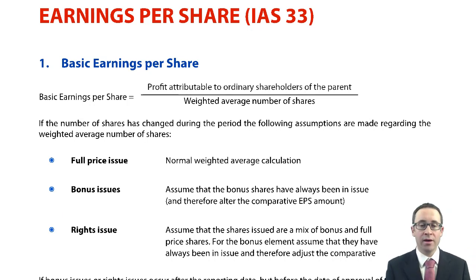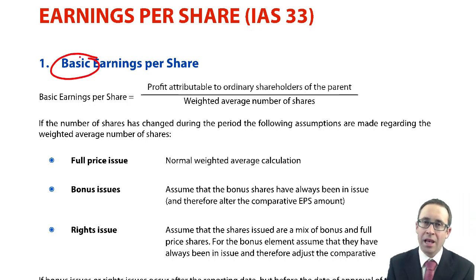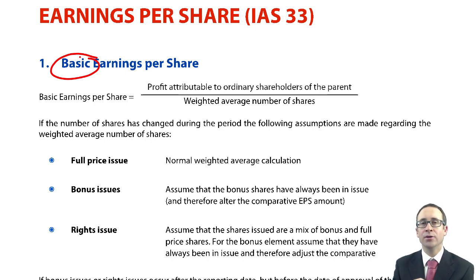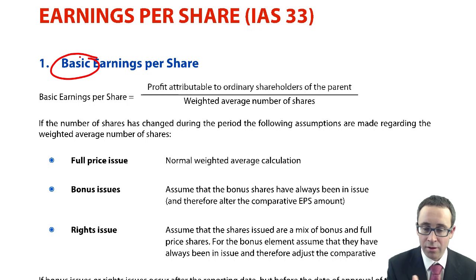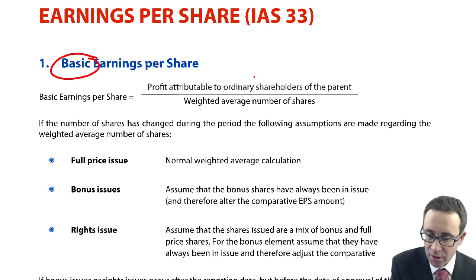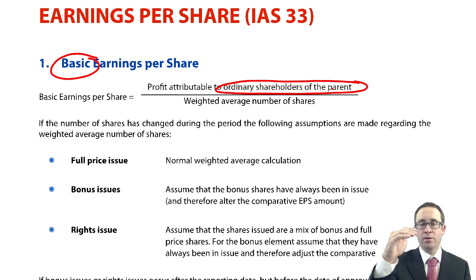Remember, there are two types of earnings per share. The first one we're going to touch upon is basic, before we look at diluted a little bit later on. Basic earnings per share takes account of your current year earnings, doesn't take any account of anything that's going to change into the future, and looks at the number of shares that are currently in issue at the year end date. When looking at the profits or earnings, it's those that are attributable to the ordinary shareholders of the parent. So if you were to work out your basic EPS in a group set of accounts, you don't take the profit for the year of the group — you take the profit for the year attributable to the ordinary shareholders of the parent.